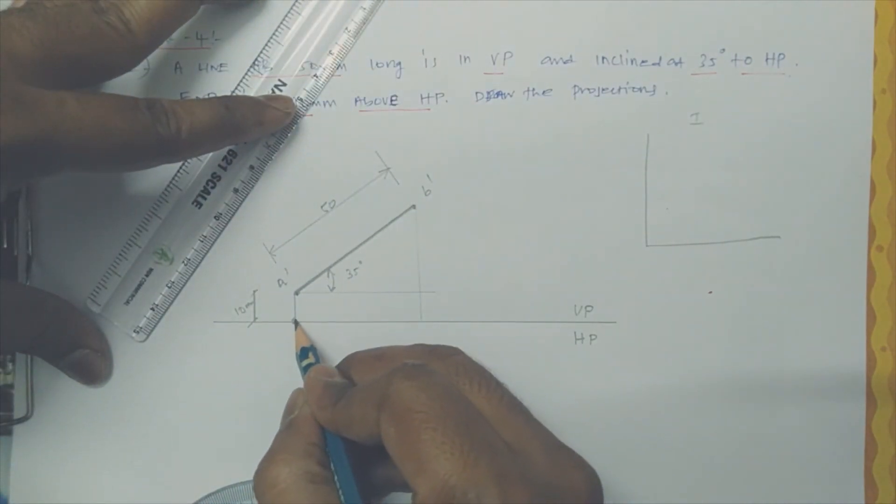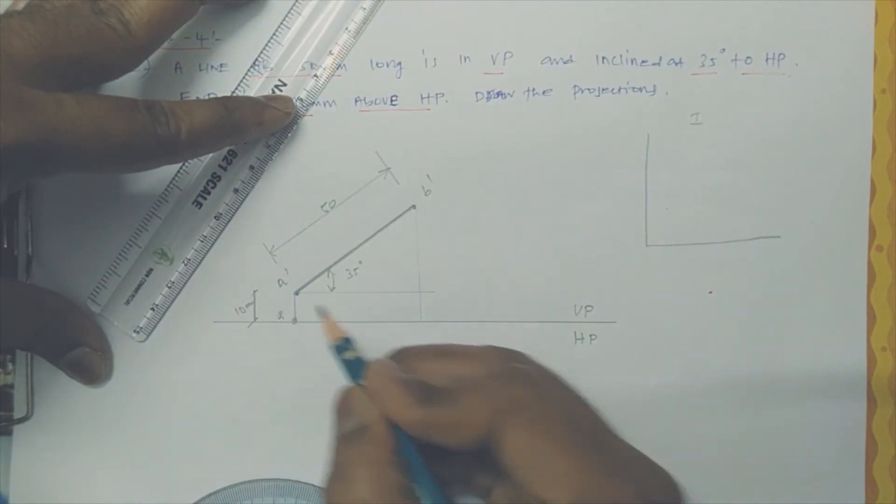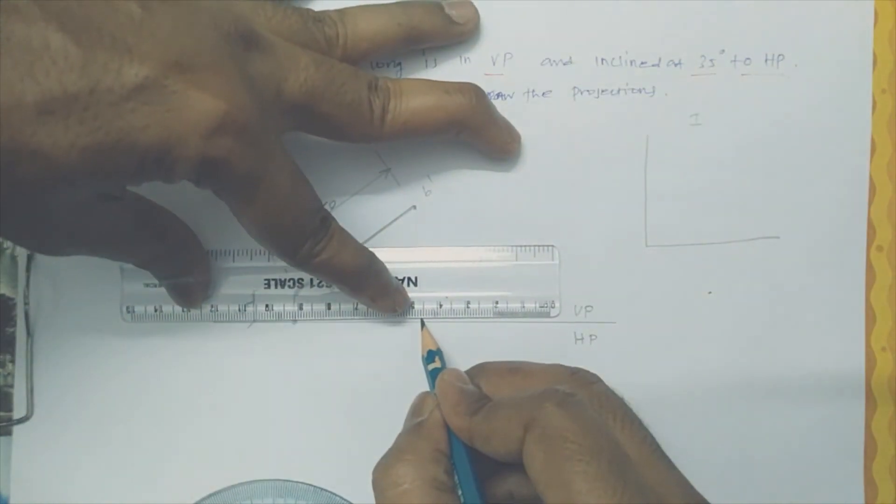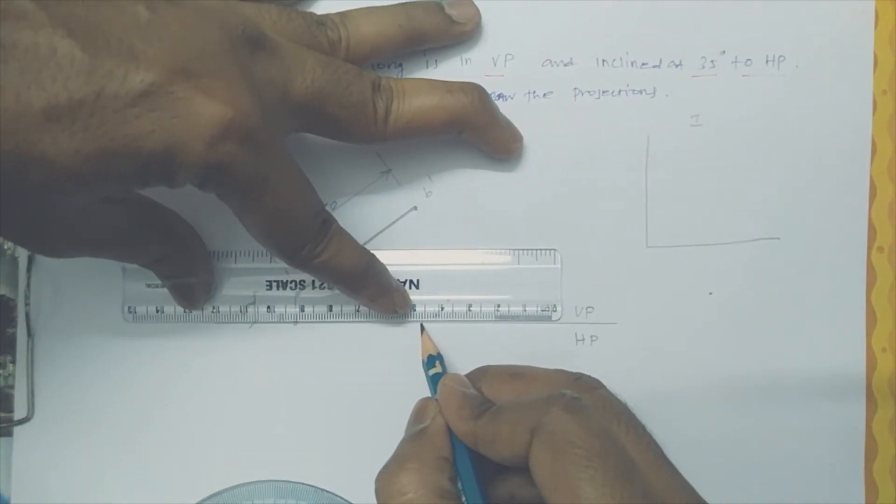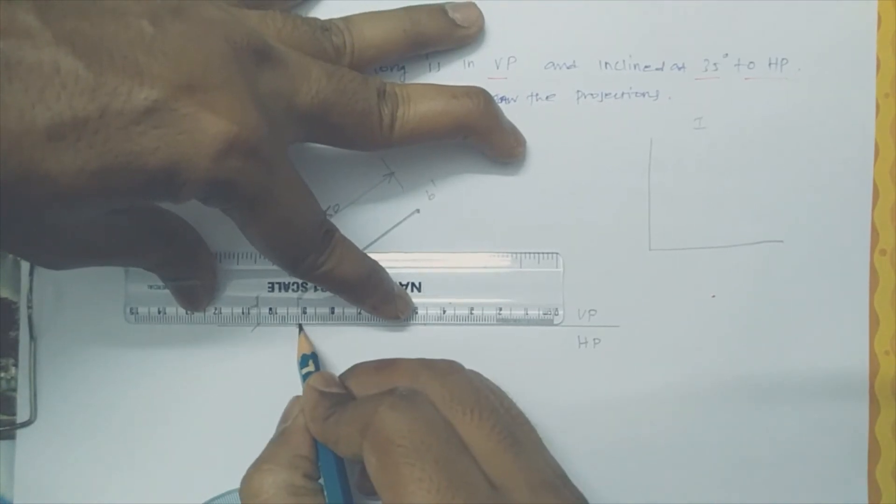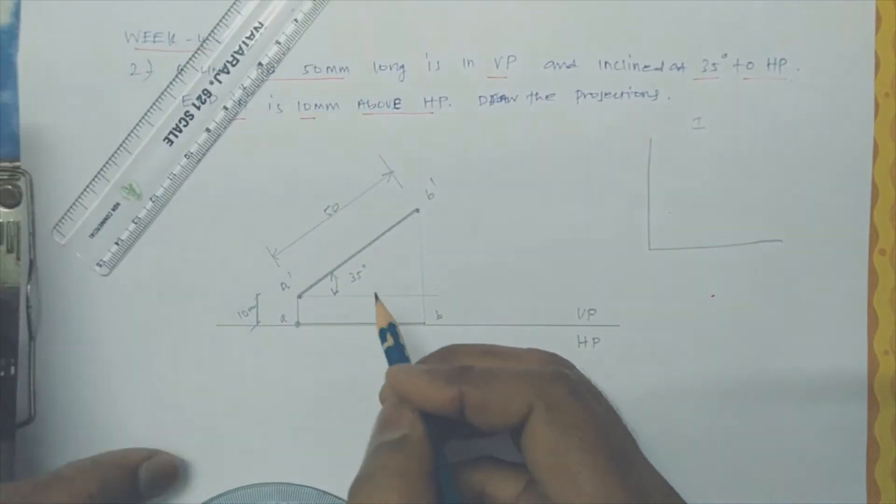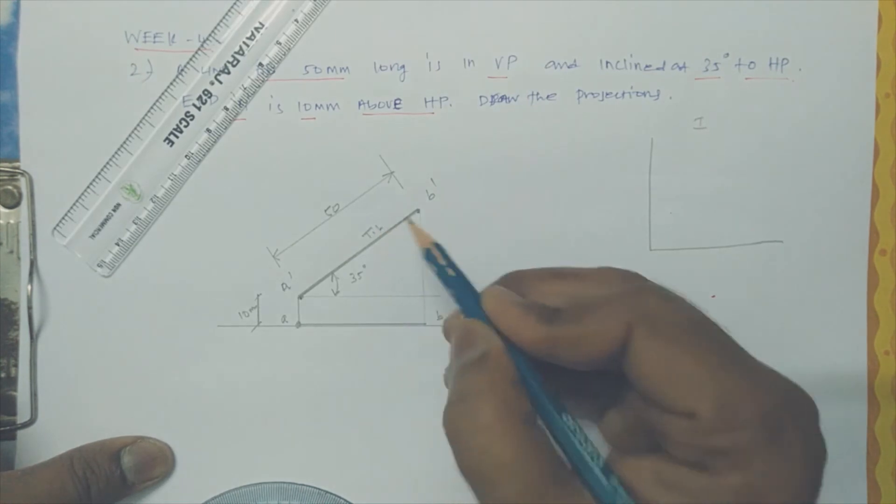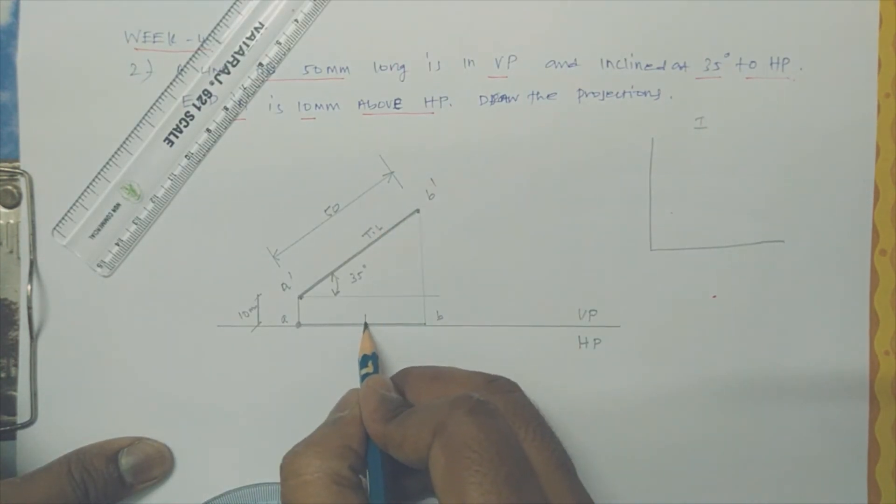So this is A and this is B. This length, this length is a true length. This one is apparent length.